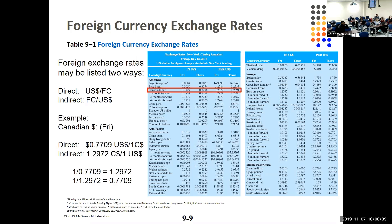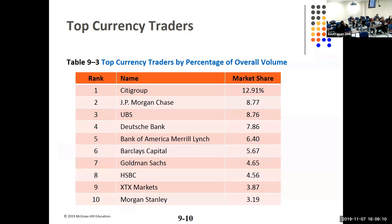For the Canadian dollar, direct is 77.09 US dollar cents to one Canadian dollar. Indirect is 1.2972 Canadian dollars to the US dollar. They're just reciprocals of each other — take either one and divide it into one and you get the other. Most quotes are in US dollars since most things are quoted that way.